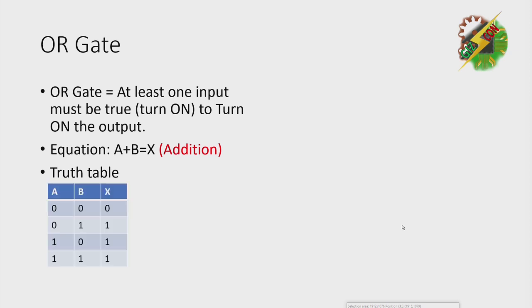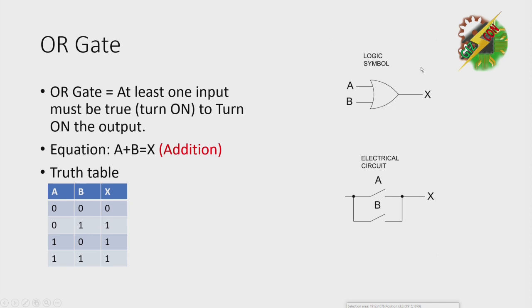Truth table. As stated, at least 1 input must be true to turn on the output. We have 0 and 0, so X will be 0. We have 0 and 1 — the output will be 1. We have 1 and 0 — output of 1. And we have 1, 1, and output of 1. This is the equivalent logical symbol for OR gate, and this is the equivalent logical circuit for OR gate.